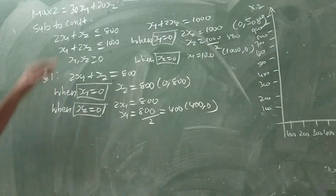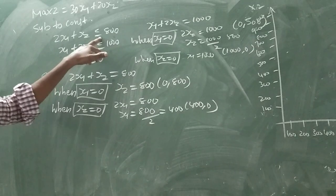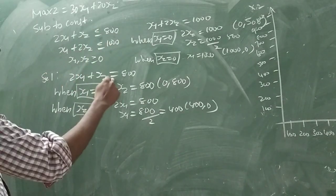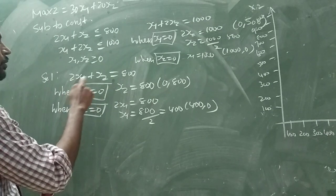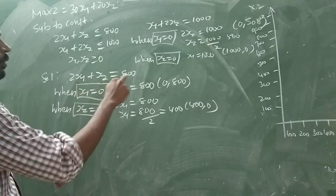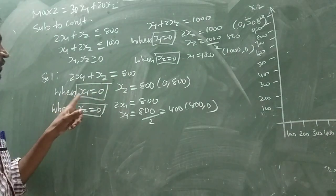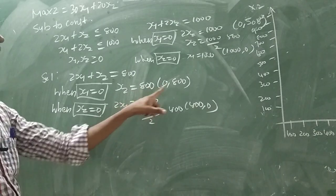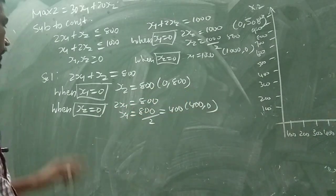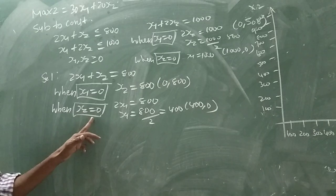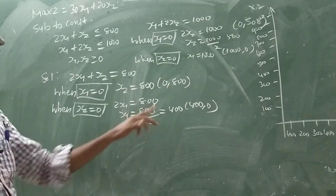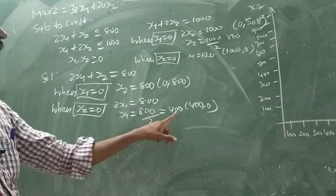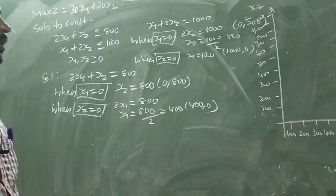And solution — this is the inequality equation. Now I will change the inequality into equality constraint. 2x1 plus x2 equal to 800. When x1 equal to 0, x2 equal to 800, so point is (0, 800). In the same equation, when x2 equal to 0, 2x1 equal to 800, x1 equal to 400, so point is (400, 0).